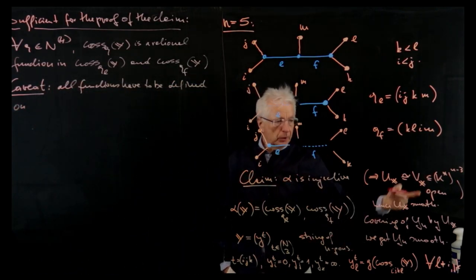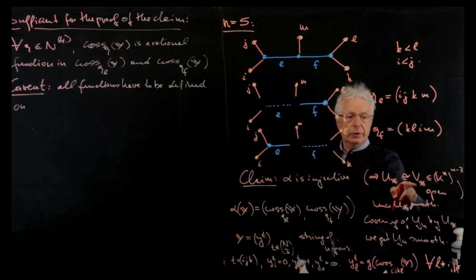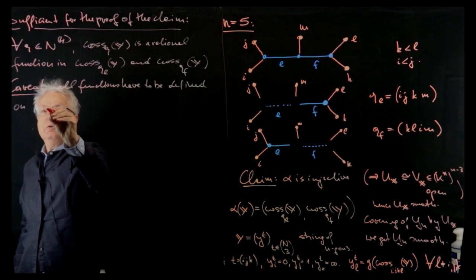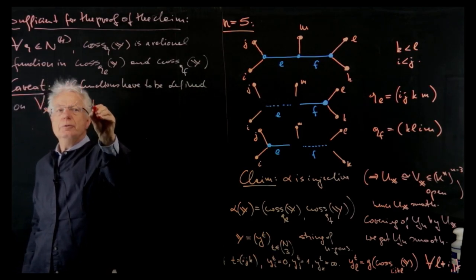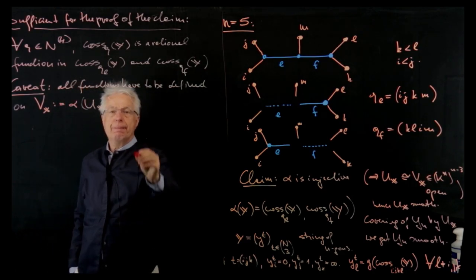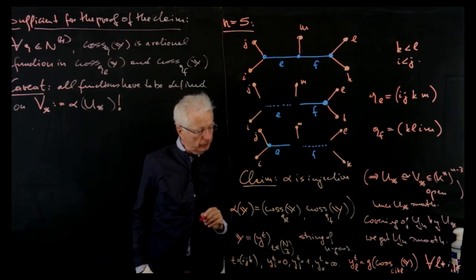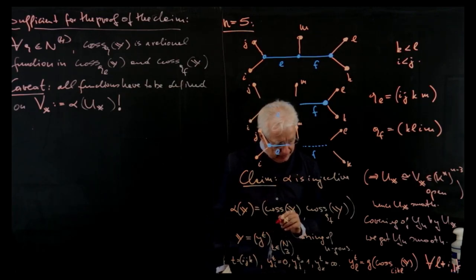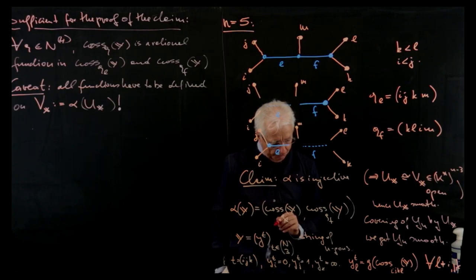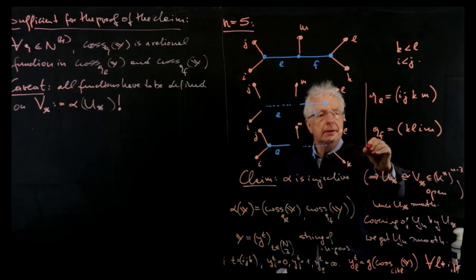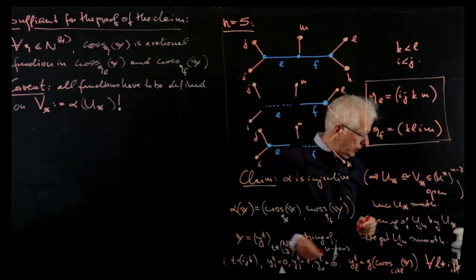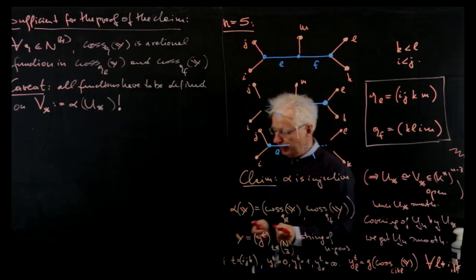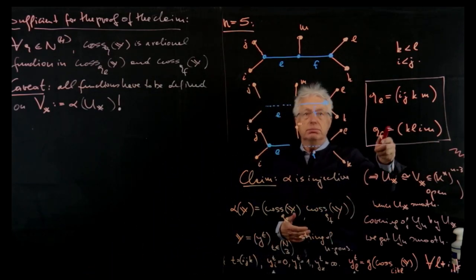It's sufficient for the proof of the claim for all q quadruple in n cross q y is a rational function in the two selected ones, in cross q e of y and cross q f of y. But there's a small caveat. I write here y, so these functions, in order to invert alpha, they have to be defined. So all functions have to be defined. And now, as we go back, where do we have it? Here. We go from ux to an image, v of x, they have to be defined on v of x. Now we want to invert. On v x, which is alpha of ux. So we have two things to do.